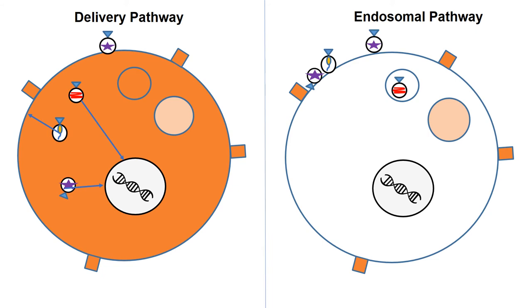On the right is the endosomal pathway. In this pathway, the cargo is broken down. This exists as a protective measure for the recipient cell.